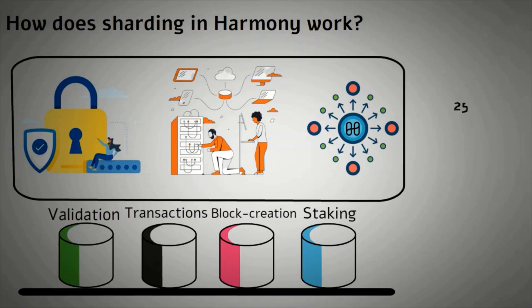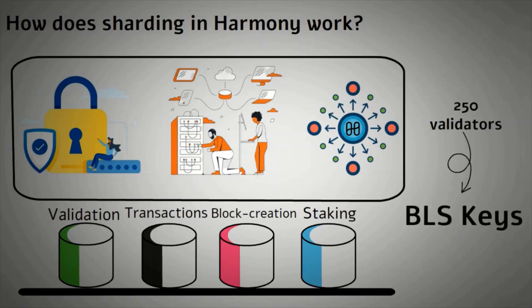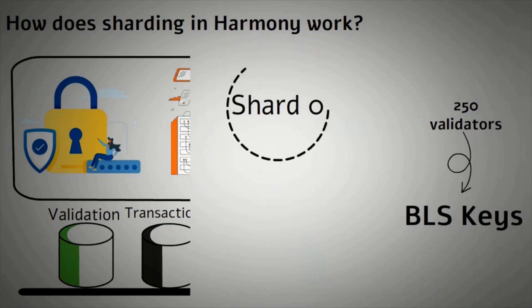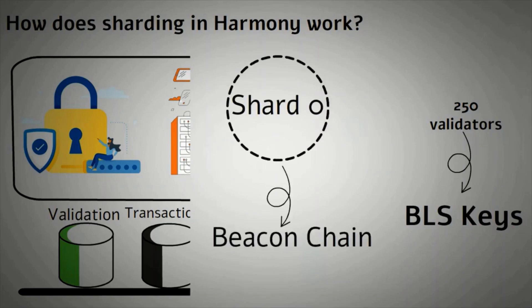Harmony currently has a limit of 250 validator slots per shard, known as BLS keys. If needed, the number of shards and validators can increase to meet network demand in the future. Shard zero is the beacon chain and acts as an information relay between shards 1, 2, and 3. No matter the shard used, transaction times will be roughly 2 seconds.